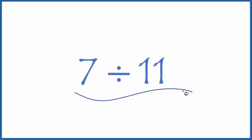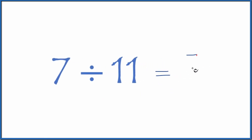If you're asked to divide 7 by 11, here's how you could do that. You could think of 7 divided by 11 as a fraction, that would be 7 over 11, 7 elevenths. Or you could divide 7 by 11 on your calculator.